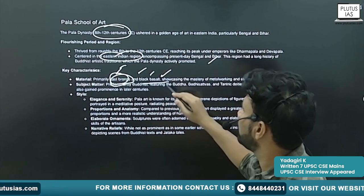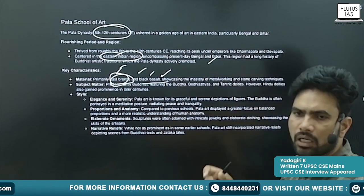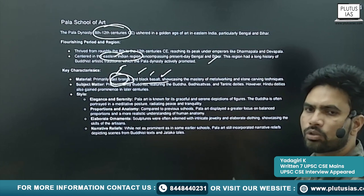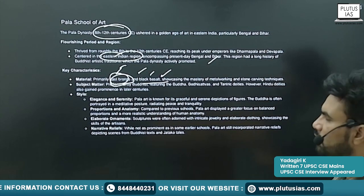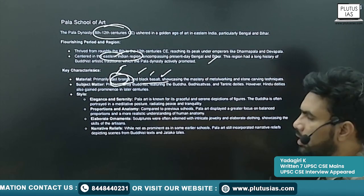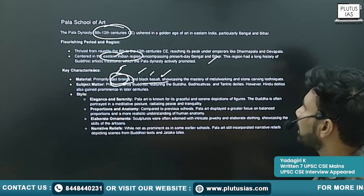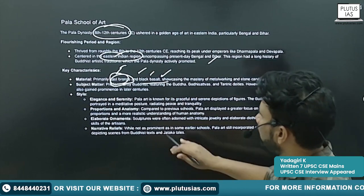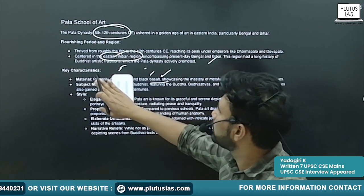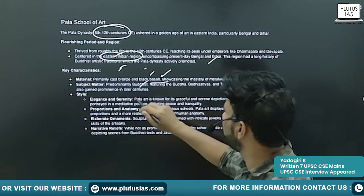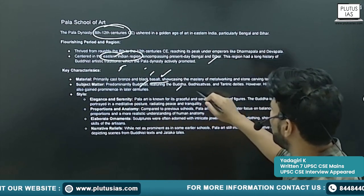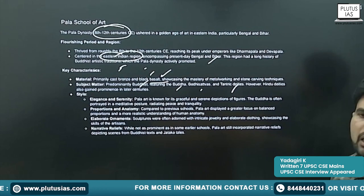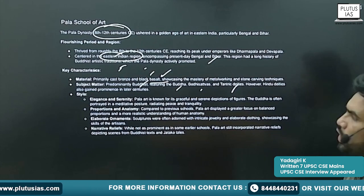Small idols were made with bronze, and you will also see black basalt — a kind of stone. Sculpting of images of Buddha in black basalt was done. Subject matter: it is predominantly Buddhist, featuring Buddha, Bodhisattvas, and tantric deities.